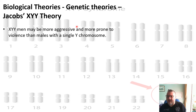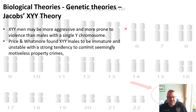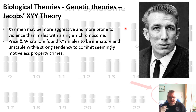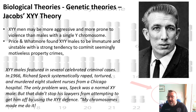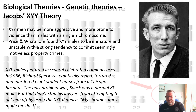XYY men may be more aggressive and more prone to violence than males with a single Y chromosome, and some studies have shown this. Price and Watmore found that XYY males were immature and unstable, with a strong tendency to commit seemingly motiveless property crimes. However, XYY became a very common defence used in courts in the 1960s. XYY males featured in several celebrated criminal cases — for instance, Richard Speck, who raped, tortured, and murdered eight student nurses in a Chicago hospital. His defence used the fact that he was XYY as an excuse for his crime, though Speck wasn't actually XYY — he was a normal XY male — but that didn't stop the lawyers from attempting to use the XYY defence.